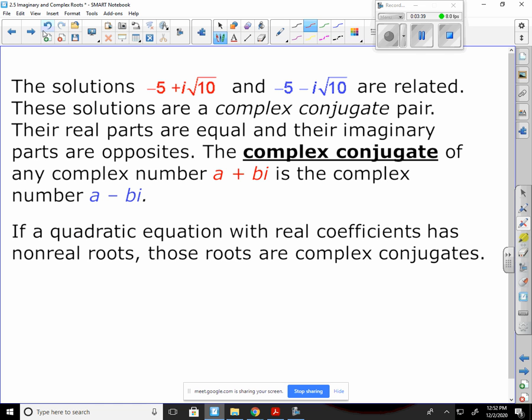In other words, one's a positive i root 10 and the other one's a negative. The complex conjugate of any complex number a plus bi is the complex number a minus bi. So if a quadratic equation with real coefficients has non-real roots, then these roots are complex conjugates.